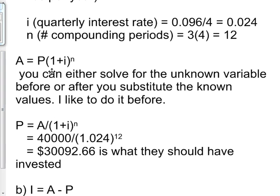So I divide by 1 plus i to the n on both sides and I get that P equals A divided by 1 plus i to the power of n. So P equals 40,000 divided by 1.024 to the power of 12 or $30,092.66. That's what they should have invested.